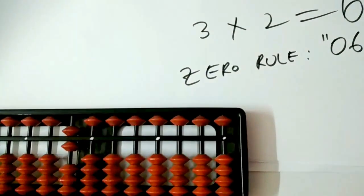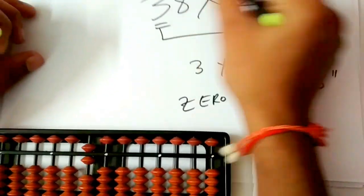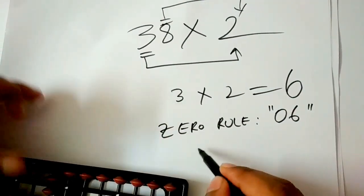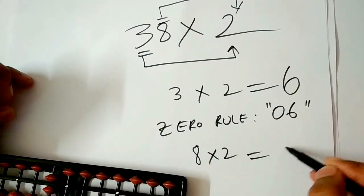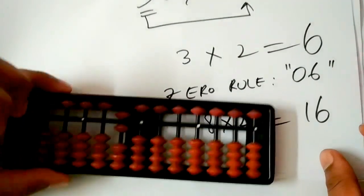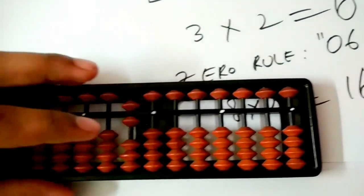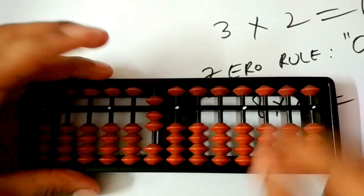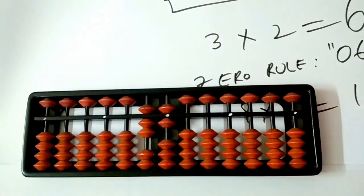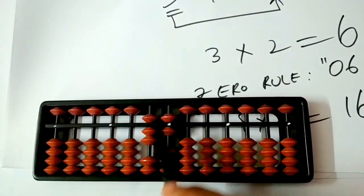So, we got 06. Second step is multiply 8 with 2. We get 16. We have to add 16 from the tens rod. This is 1 and this is 6. We got the answer as 76.